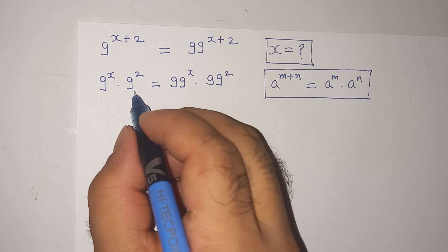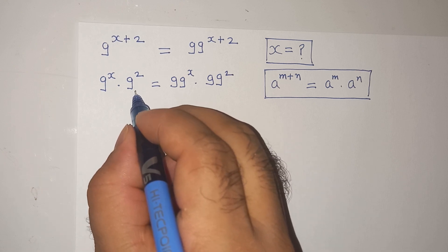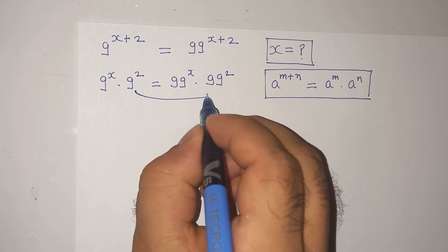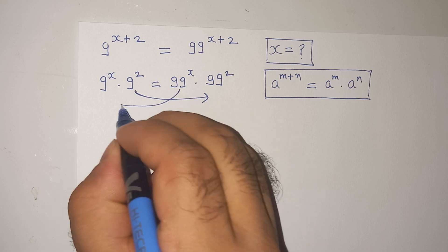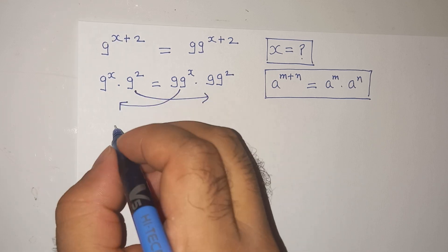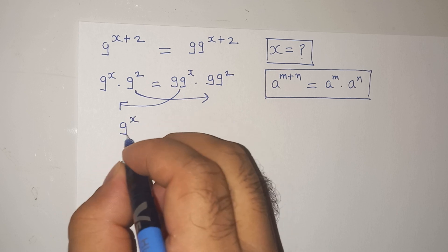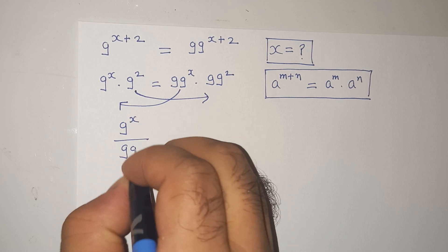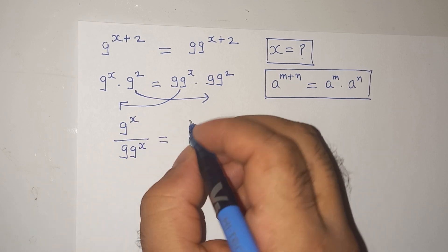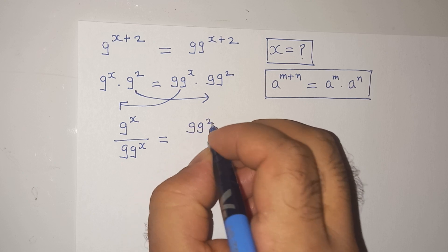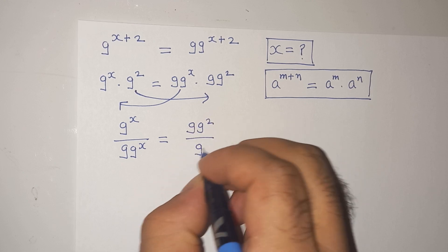Now I am going to take this 9 square on the right side and this 99 power x on the left side. So I can write the above expression as 9 power x divided by 99 power x equals to 99 square divided by 9 square.